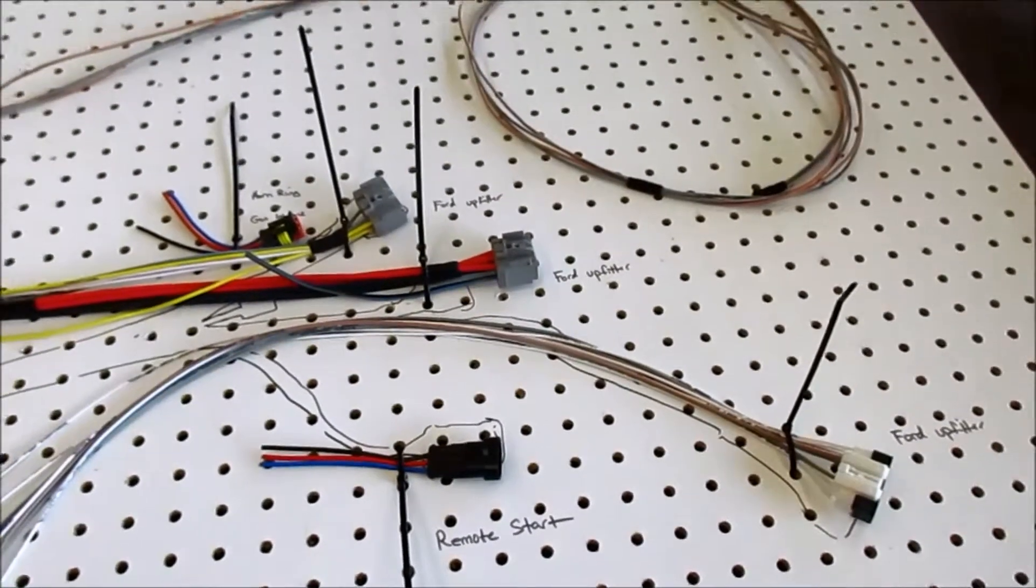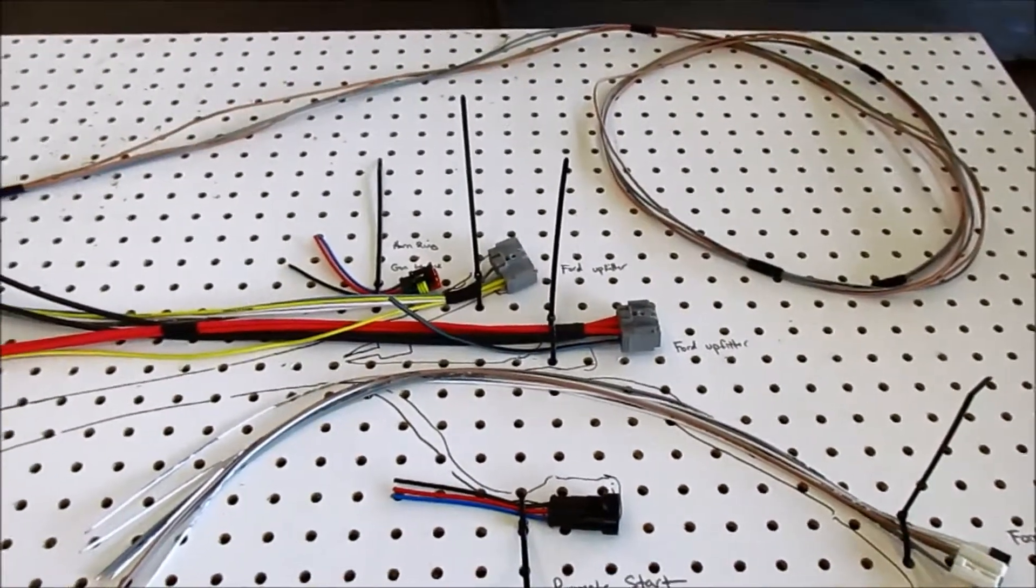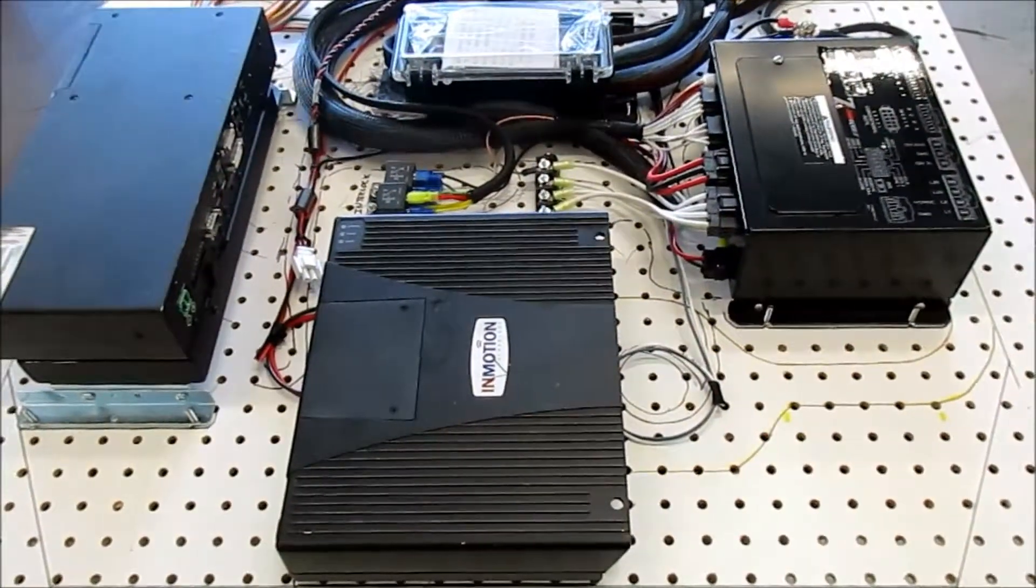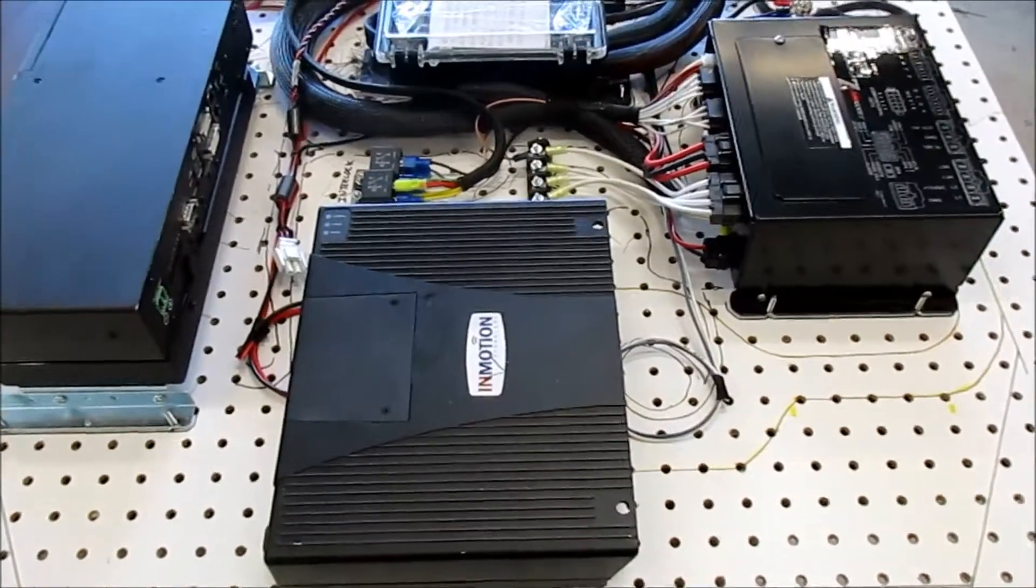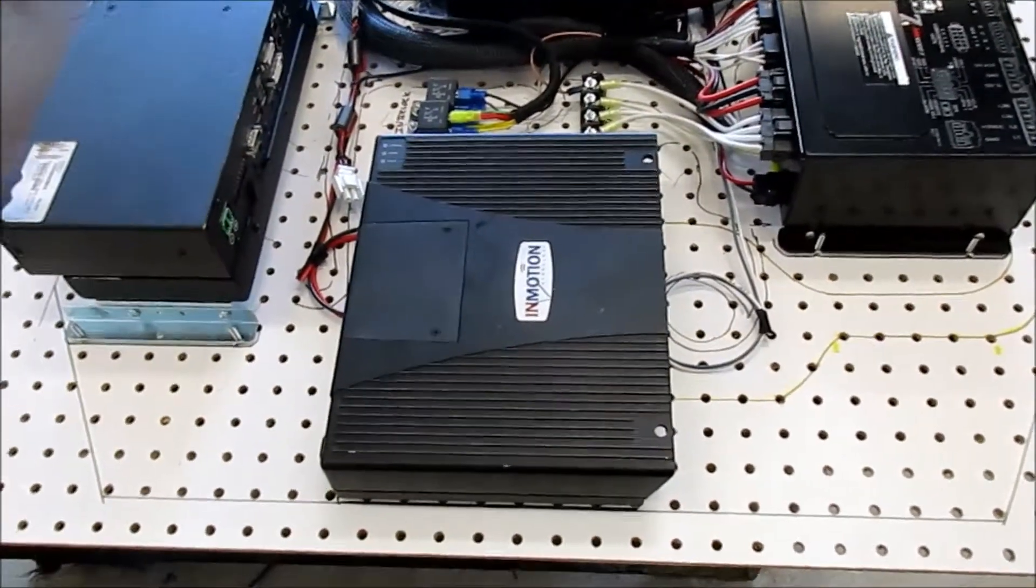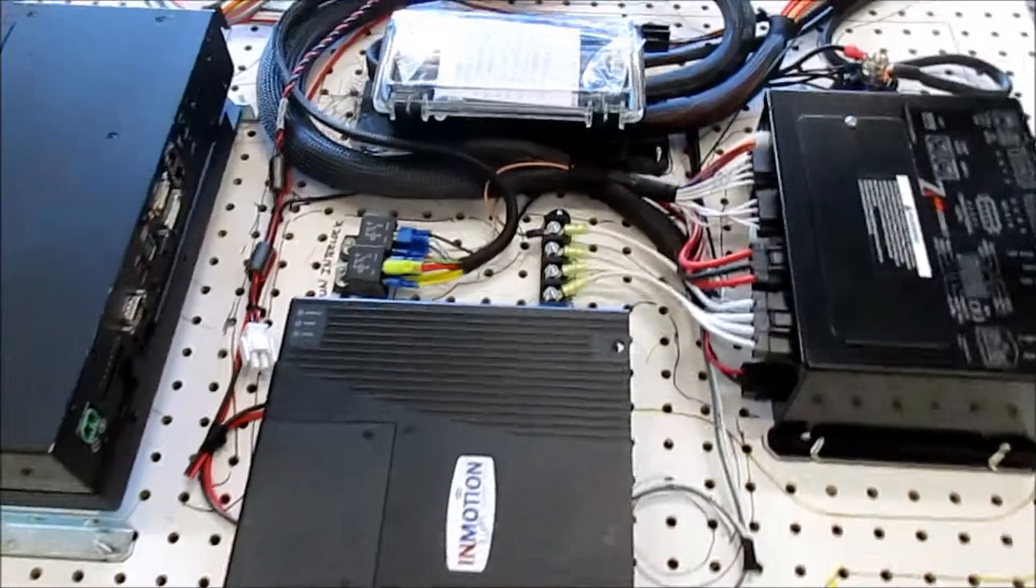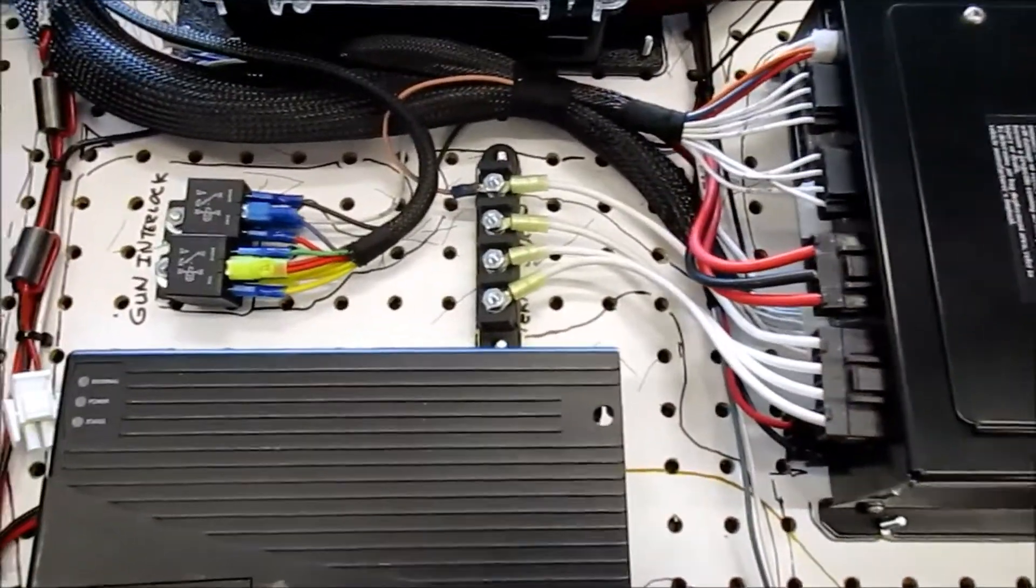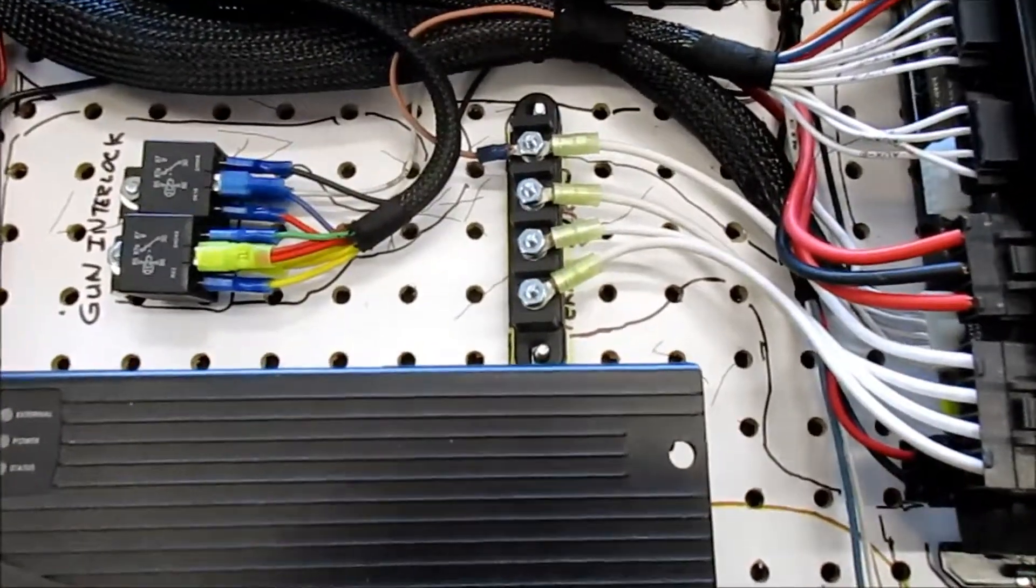In the next videos you're going to see how we cut the harnesses to the length, splice together, and kind of clean it up. Okay, we're back and what we're looking at now is the finished product on the pegboard. As you can see here, Alex has got the Z3 wired up, he's got a couple of the relays, a bus bar.